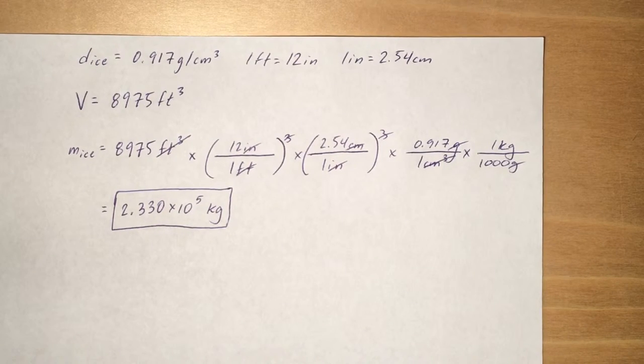And you're going to use that as your third conversion factor. So in order to get the mass of ice, you write down that volume, 8,975 feet cubed.